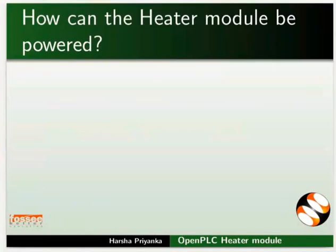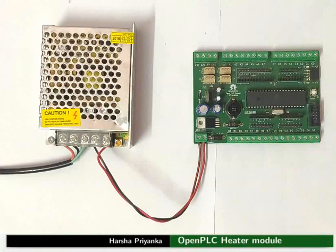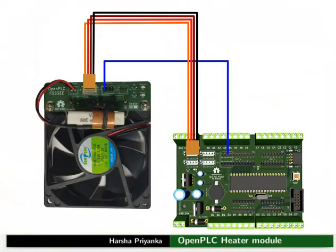The heater module can be powered using the output power pins of the mainboard. Connect the SMPS to the mainboard as shown. Now we will look at the working demo of the module. Make the connections as shown in the picture. Remember to turn off the power while changing or making new connections. Connect the power pins of the module from the mainboard using Relimate connectors.